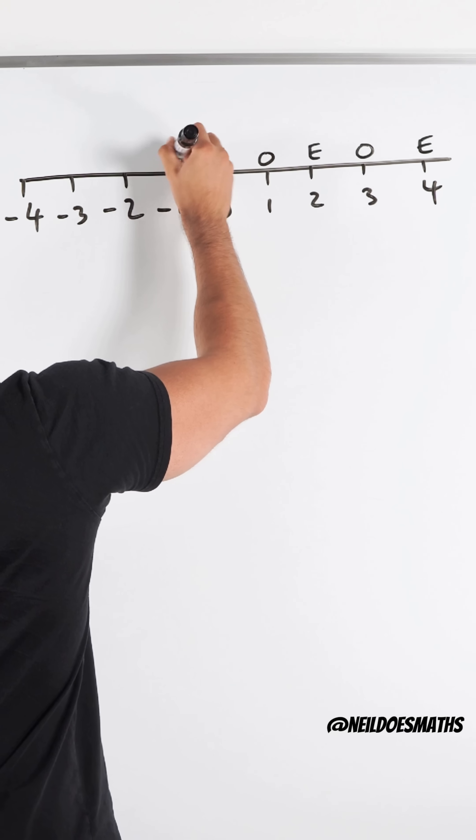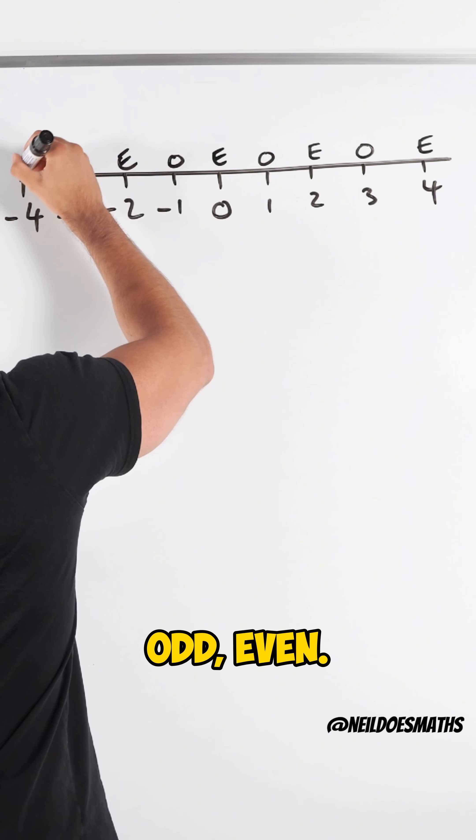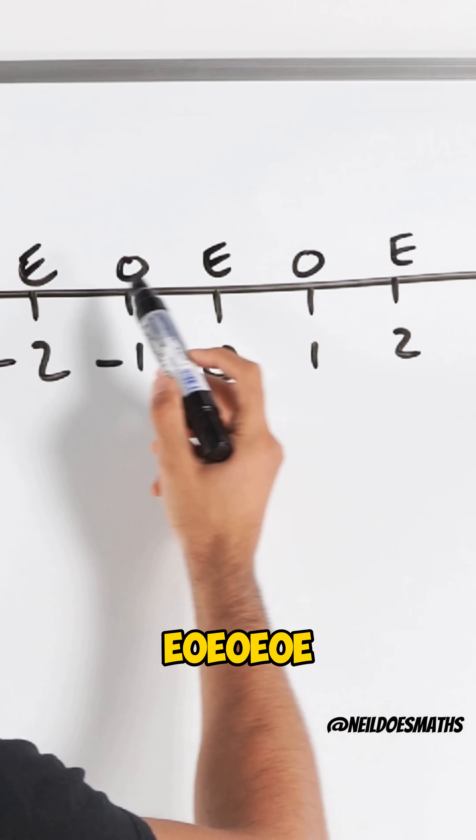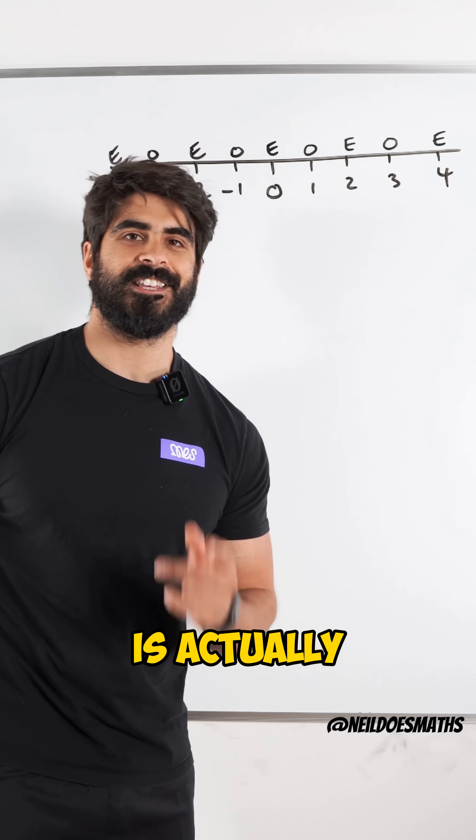We've got an even, odd, even, odd, even. And if you read it, it says E-O-E-O-E-O-E-O-E. It means zero is actually even.